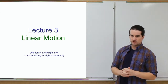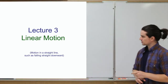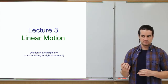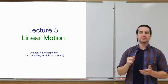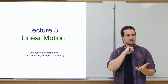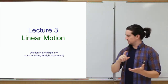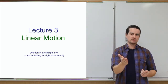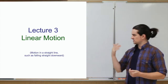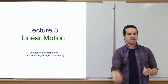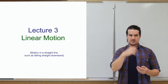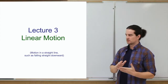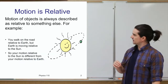Before we get into Newton's second law, we need to talk a little more about linear motion — essentially motion in a straight line, like zooming down the highway at 60 miles per hour, or falling straight down. Linear motion is not necessarily uniform motion; for example, something falling downward is actually speeding up as it falls, so that's not uniform, but it is linear.